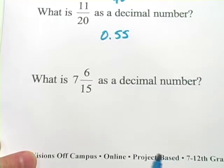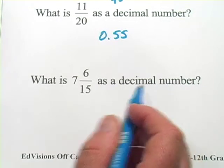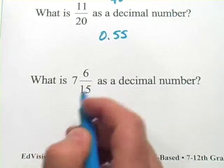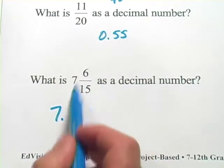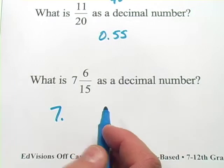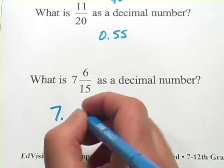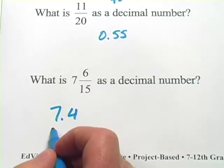Alright, let's try one more. What is 7 and 6 fifteenths as a decimal number? So this one's a little more complicated because you've got a mixed number. But really, the 7, we just write down as a 7, and then we're going to have our decimal point and whatever 6 fifteenths is, and you can figure that out by punching in your calculator, 6 divided by 15, and you get .4. So 7.4 is our answer there.